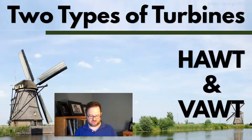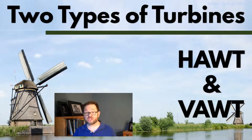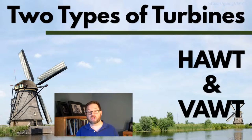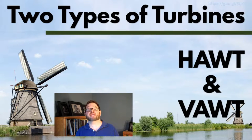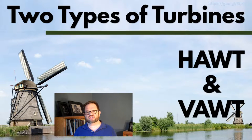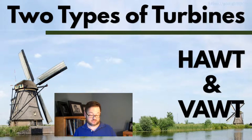Welcome back. We're up to part three now of our lecture about wind turbines. Remember I said that there were two types of wind turbines we're going to be interested in: the horizontal axis wind turbines and the vertical axis wind turbines. Let's spend a few minutes talking about some of the advantages and disadvantages of different designs we could have for HAWT systems.